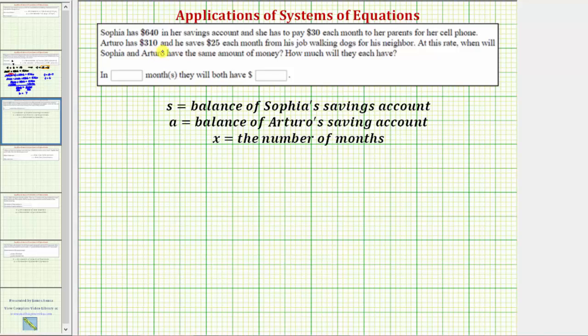Sophia has $640 in her savings account and she has to pay $30 each month to her parents for her cell phone. Arturo has $310 and he saves $25 each month from his job walking dogs for his neighbor. At this rate, when will Sophia and Arturo have the same amount of money and how much will they each have?